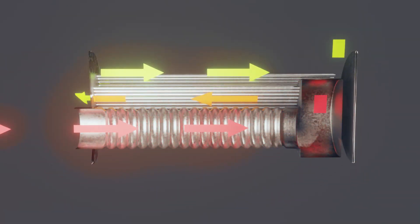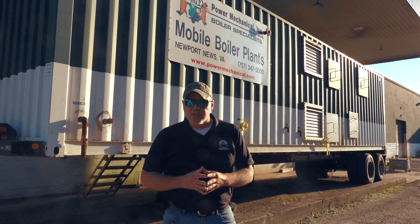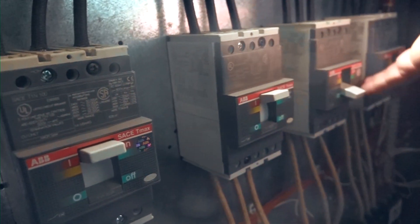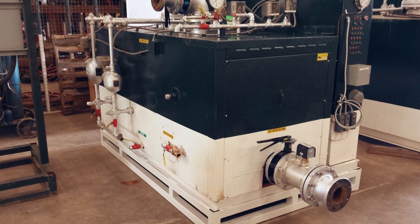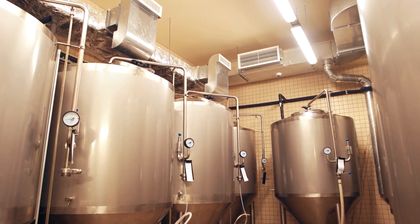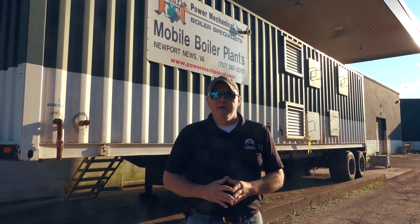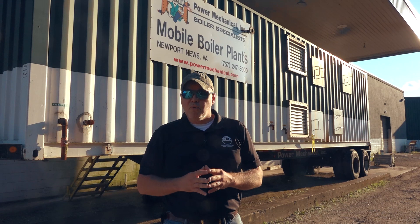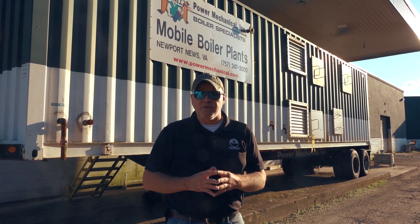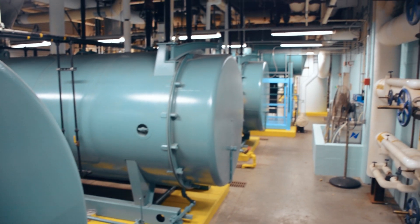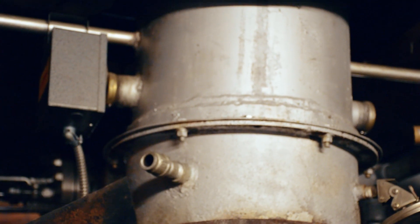There are several other designs that we find in commercial and industrial applications, such as cast iron sectionals, electric boilers, vertical and condensing boilers. These designs vary to meet the different facility demands, namely lower capacities, smaller footprints, and ultra high efficiency capabilities. It's important to mention that all boilers are designed to meet very high efficiency standards. How the boiler is maintained, operated, and monitored will dictate the actual efficiency that the unit is delivering.